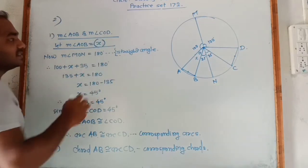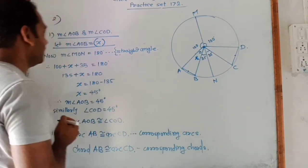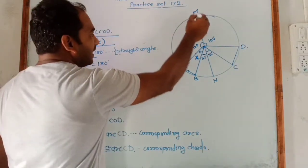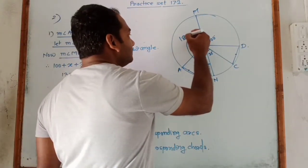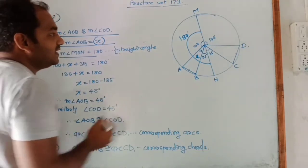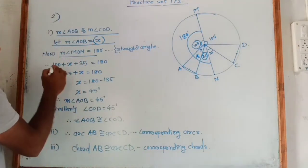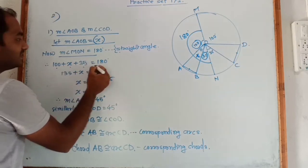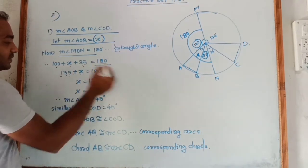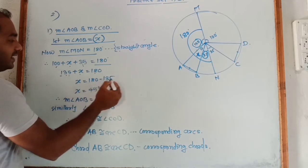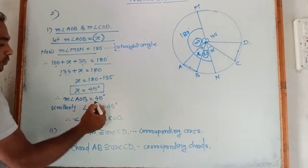Let the measure of angle AOB be X. Now, measure of angle MON is 180 degrees because it is a straight angle. Angle MON is formed with 100, X, and 35. Therefore: 100 + X + 35 = 180. Solving: 135 + X = 180, so X = 180 − 135 = 45 degrees. That means angle AOB is 45 degrees.